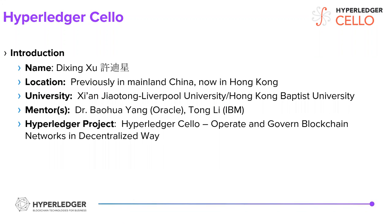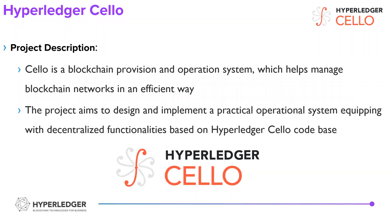Cello is operated on a government blockchain network in a centralized way. Cello is a blockchain provision and operation system which helps developers and operators manage blockchain networks in an efficient way. This project aims to design and implement a practical operational system with decentralized functionality based on Hyperledger Cello. There are some companies already using Cello in production, but they have modified it from the Cello code base.